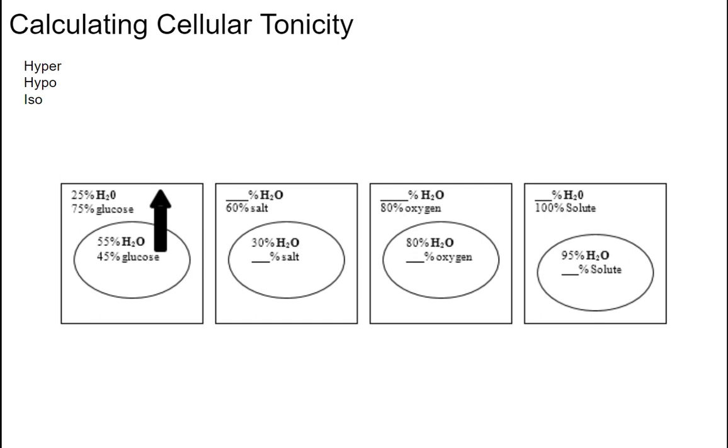In this video we're going to be talking about how to actually calculate the tonicity of cells and the movement of water. First thing you need to do is make sure you have a piece of paper out or your whiteboard out, and I want you to do two things to start off.